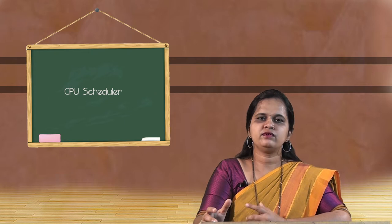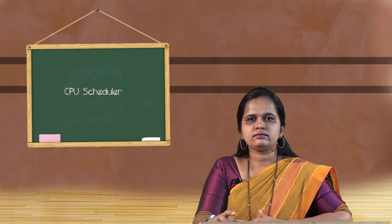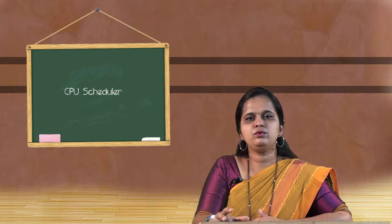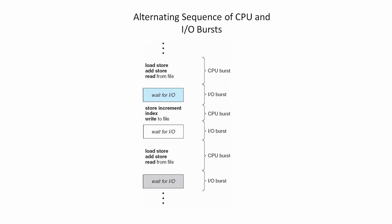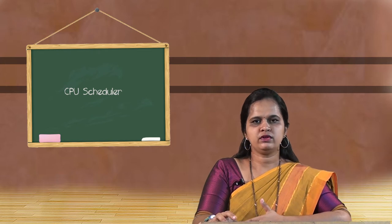Each process gets an opportunity to execute its instructions. This is what the histogram for CPU burst times looks like — we have uniformly executed all processes and uniformly distributed the CPU burst time. And this picture shows the alternative sequences of CPU and IO burst cycles: the CPU burst is first executed, the process uses the CPU, then the IO burst — the process may be waiting for IO devices — then it gets CPU again, then IO devices again, alternating between IO burst and CPU burst.